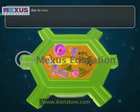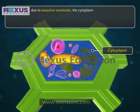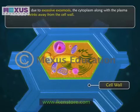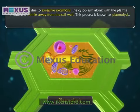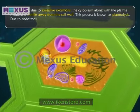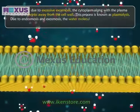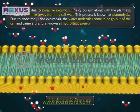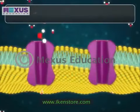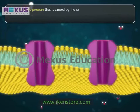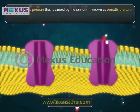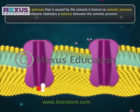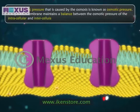In plant cells, due to excessive exosmosis, the cytoplasm along with the plasma membrane shrinks away from the cell wall. This process is known as plasmolysis. Due to endosmosis and exosmosis, water molecules come in or go out of the cell and cause a pressure known as hydrostatic pressure. The hydrostatic pressure caused by osmosis is known as osmotic pressure. The plasma membrane maintains a balance between the osmotic pressure of the intracellular and intercellular fluids.